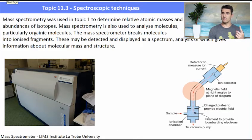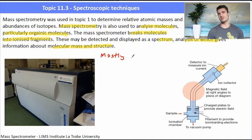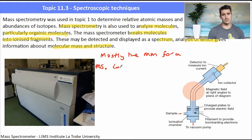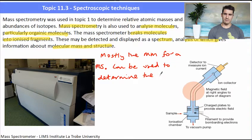So the mass spec was used in topic one to determine the relative atomic masses and abundances of isotopes. It's also used to analyze molecules, particularly organic molecules, because it breaks them apart into ionized fragments. These are detected and a spectrum is produced which gives us information about the molar mass and the structure. The most important thing for you at the moment is the molar mass. When we use the mass spec we're able to determine the molar mass of a compound and then that allows us with other information to determine the structure and the chemical formula. I've got an image on the right hand side of the mass spec. You don't need to know any of the operations of it - that was in one of the guidance points.